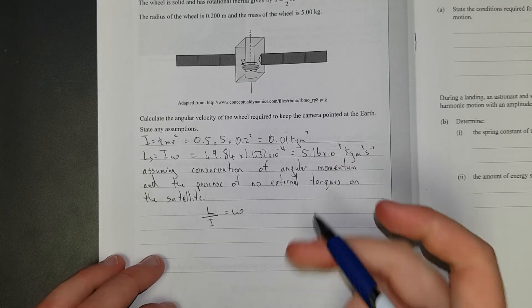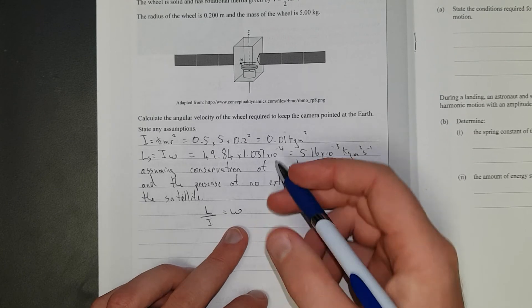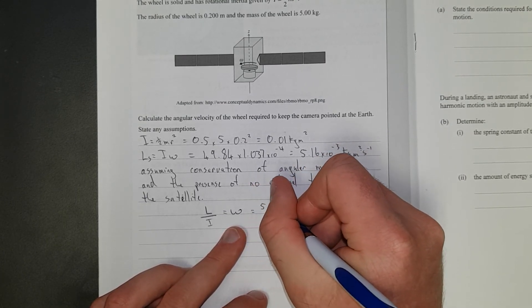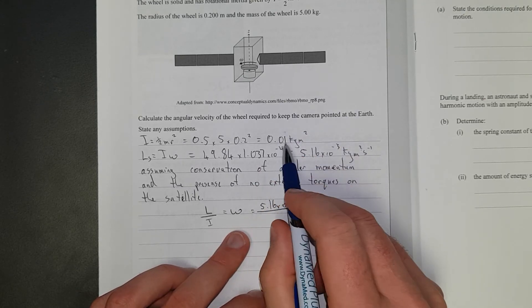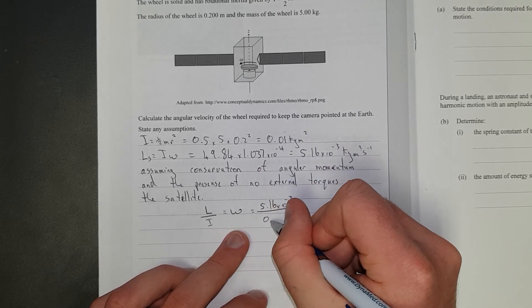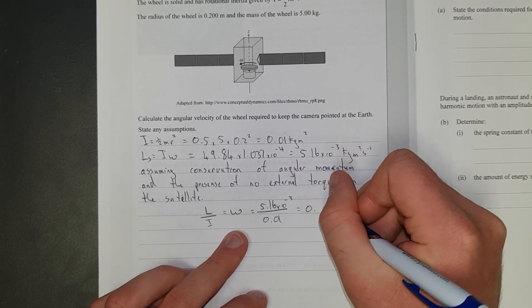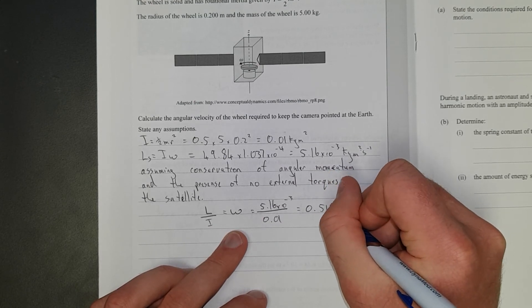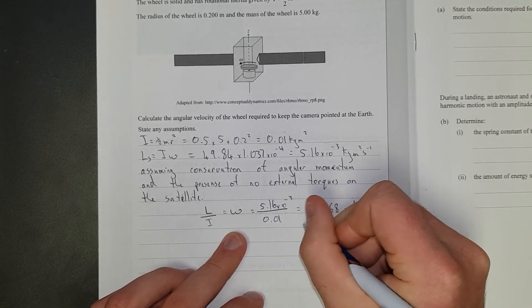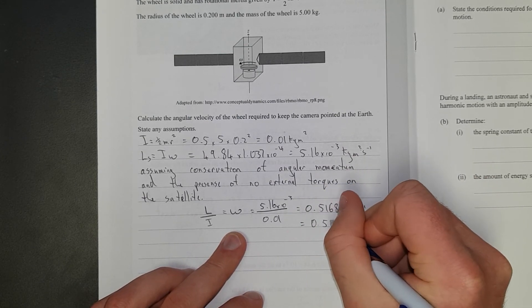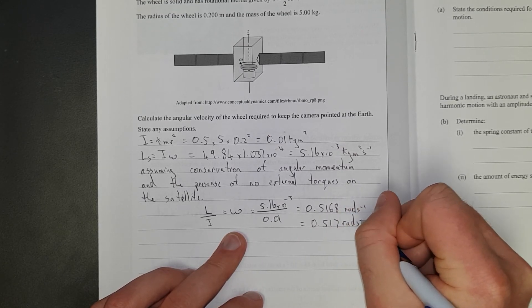So, what have we got? L divided by the rotational inertia should give me the angular velocity, which is what I'm looking for, the angular velocity of the wheel. And I've stated the assumption, so that's the assumption, conservation of momentum, excluding any external torques. If you've got any external forces, you get it wrong, because it's not level 2, it's level 3. And angular momentum is always angular stuff, not linear stuff. That is going to give me 5.16 times 10 to the negative 3 divided by 0.01, which is going to give me 0.5168 radians per second, which is going to be equal to 0.517 radians per second.